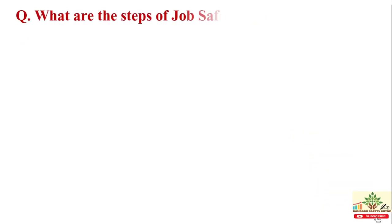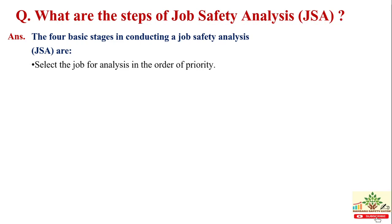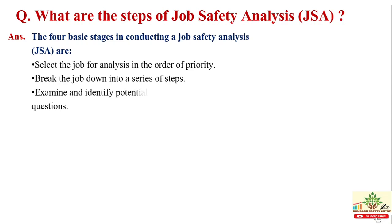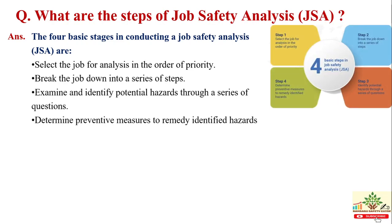What are the steps of job safety analysis? Step 1: Select the job for analysis. Step 2: Break down the job into a series of steps. Step 3: Examination and identification of potential hazards through a series of questions. Step 4: Determine preventive measures to address the identified hazards.